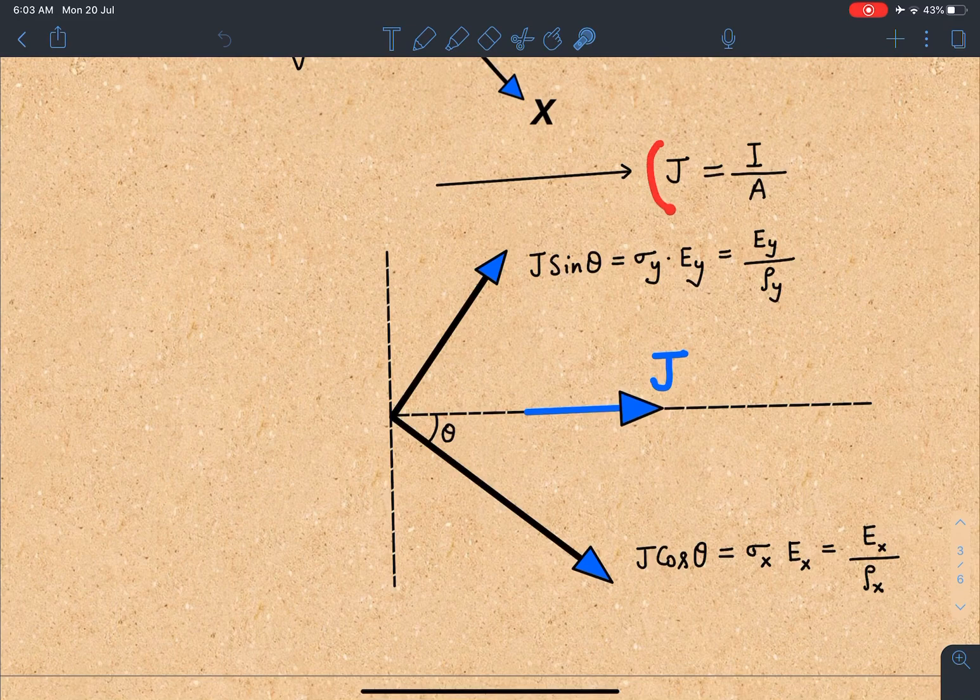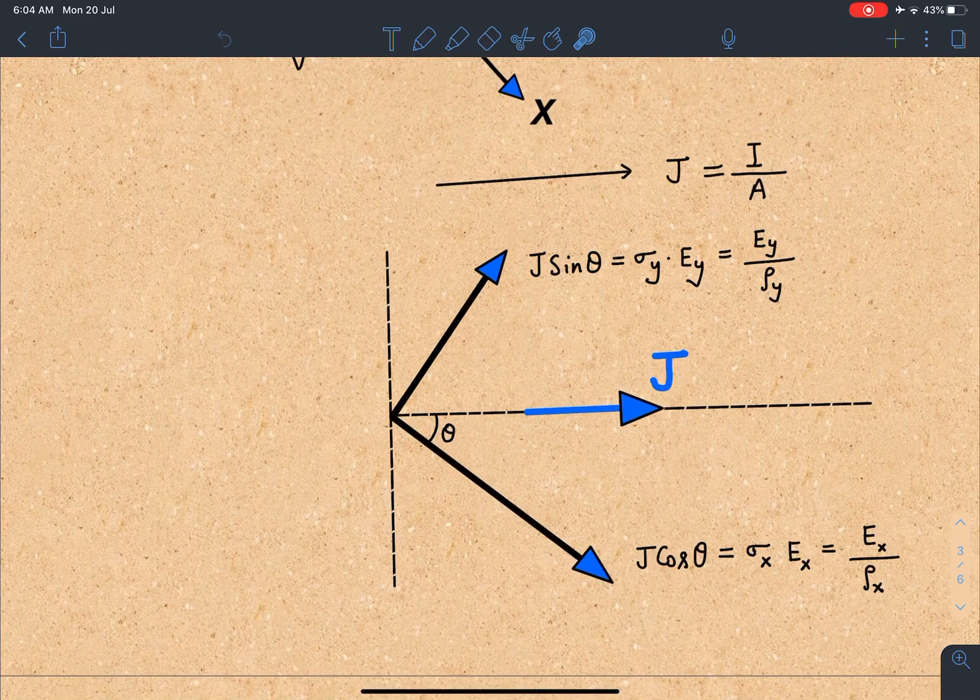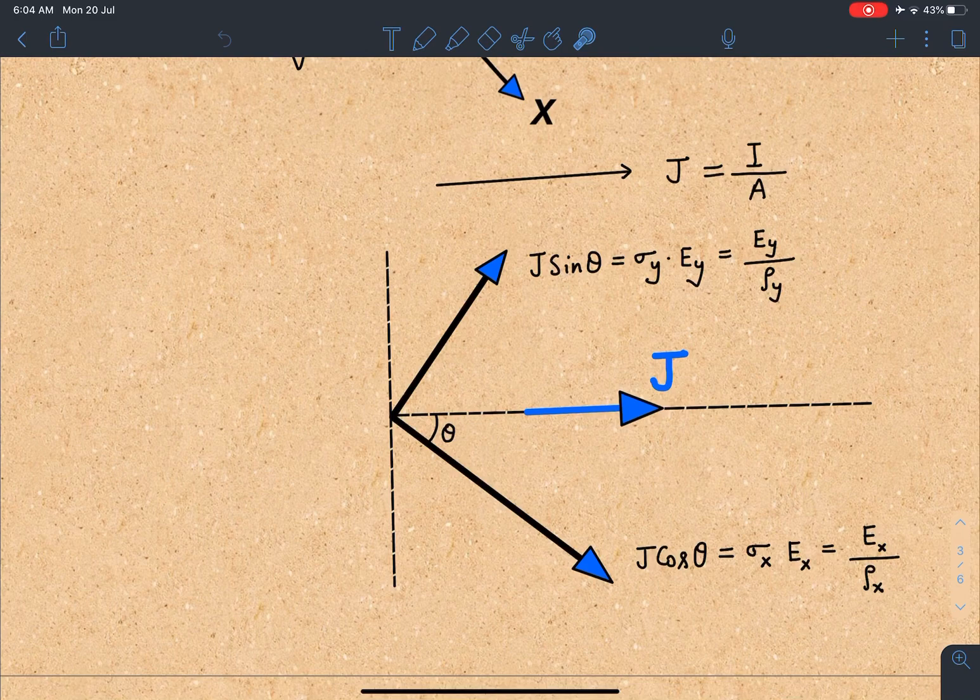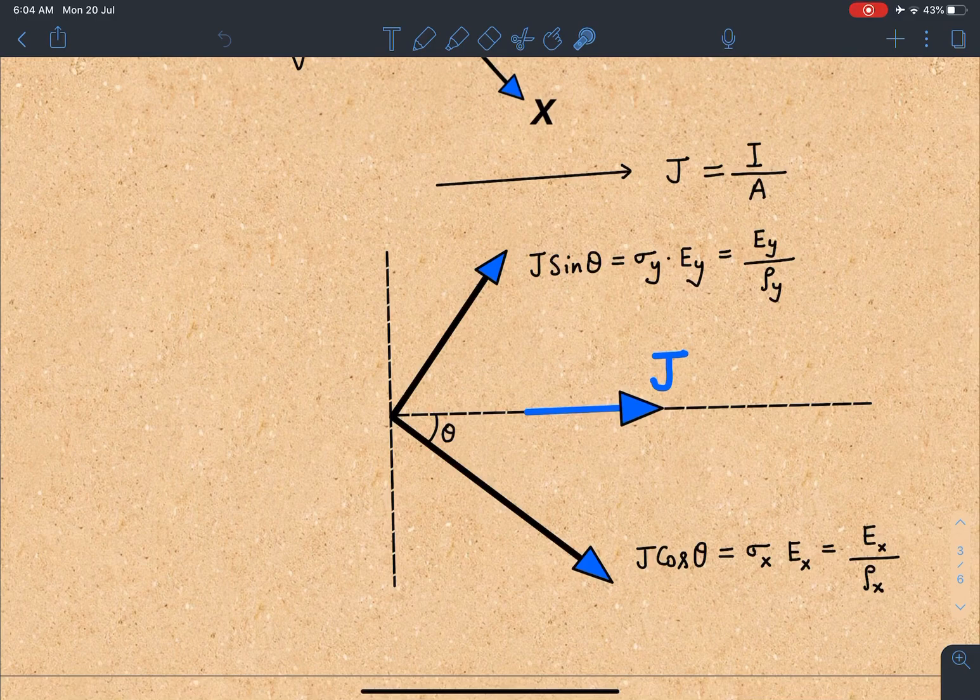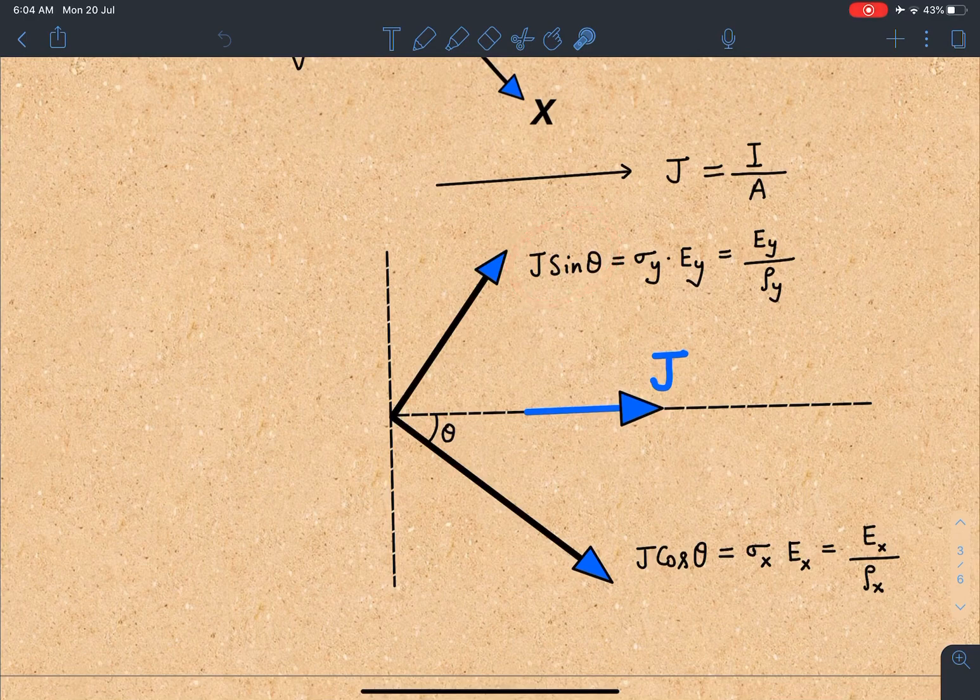That's the reason I am focusing on J vector, which is current density vector, and I will be taking the components in two perpendicular directions. This J along x-axis will have a component of J cos θ and along, let's say this is y-axis perpendicular to x-axis, value will be J sin θ.